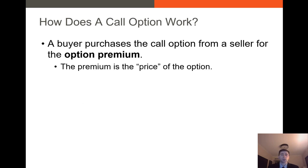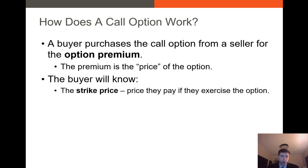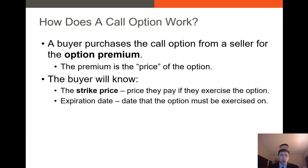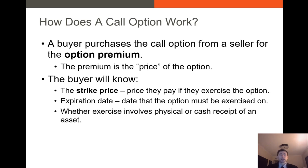Let's talk about how call options work. When you want to buy a call option, you look at what the option premium is. That premium is essentially its price — the price you pay to purchase the option that you want to exercise at a potentially later date. The buyer is typically going to know the strike price, the expiration date when that option expires and becomes worthless, and the transmission method — whether they receive cash, shares of stock, or in the case of physical commodity options, actual physical goods.